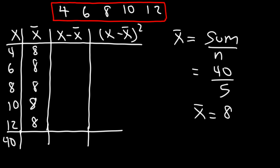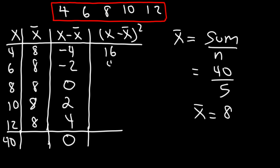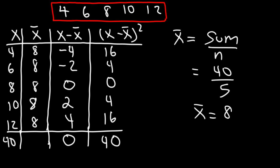Now let's calculate the deviations. 4 minus 8 is negative 4; 6 minus 8 is negative 2; 8 minus 8 is 0; 10 minus 8 is positive 2; and 12 minus 8 is 4. If we add up this column, the sum of the deviations should always be 0. Next, let's calculate the square of the deviations. Negative 4 squared is 16; negative 2 squared is 4; 0 squared is 0; 2 squared is 4; and 4 squared is 16. Taking the sum: 16 plus 4 is 20, 4 plus 16 is also 20, and 20 plus 20 is 40.